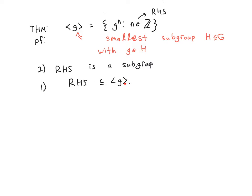Because it's a subset of the smallest subgroup of g, and it is a subgroup in its own right — that would mean that it must be the smallest subgroup, logically, by definition of smallest. Being a subgroup with g as an element means that angle brackets g has to be a subset of that set on the right-hand side.